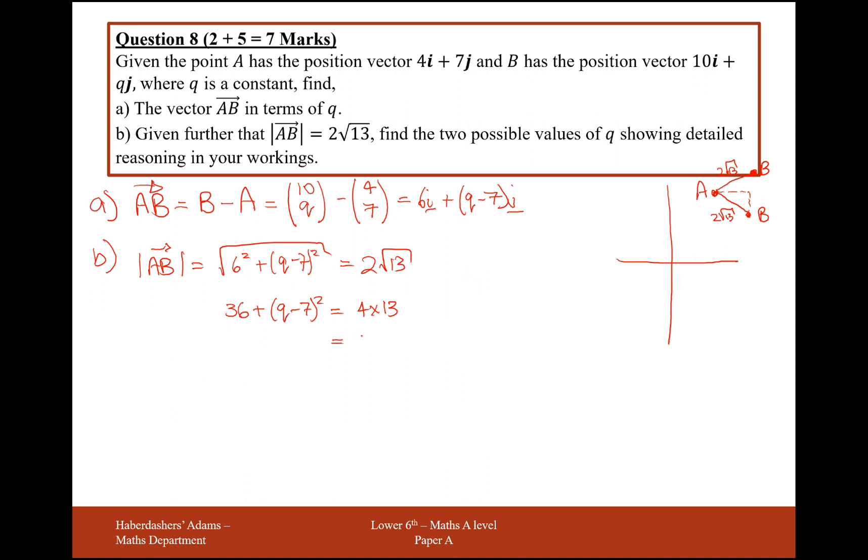4 lots of 13 is 52. So it would be 36 plus q minus 7 squared. Take away 36 from that and you get 16.